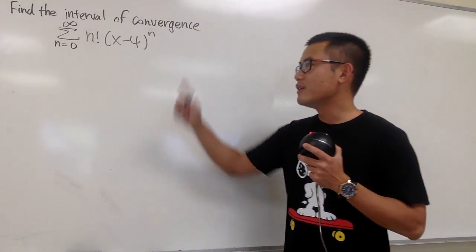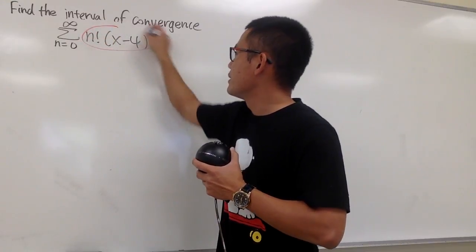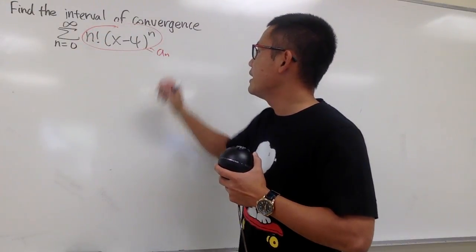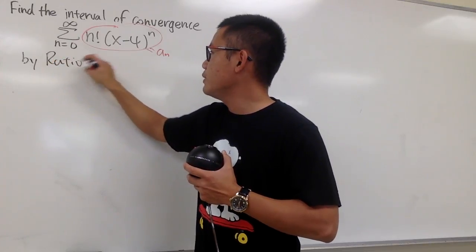Okay, we're going to find the interval of convergence for this power series by using the ratio test. We are going to set this right here to be our a_n, and we know that we are going to use the ratio test, so let's put that down.